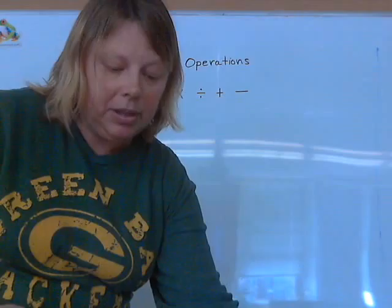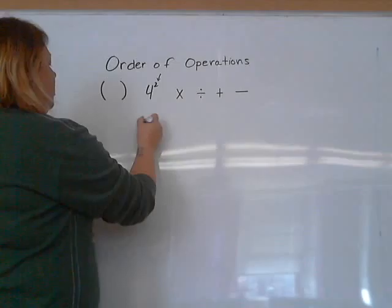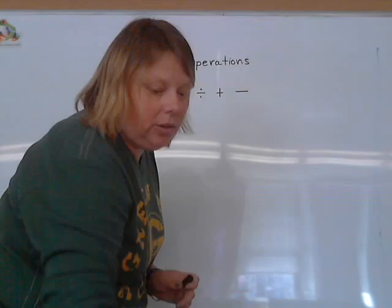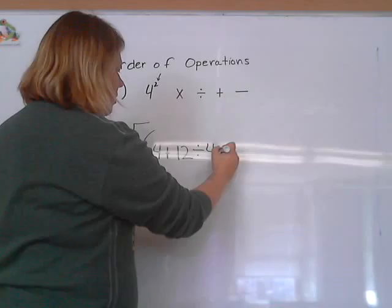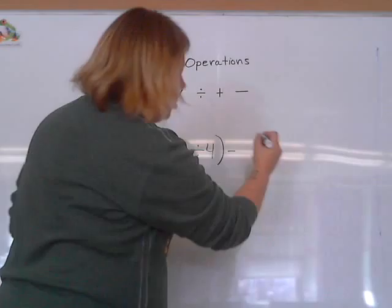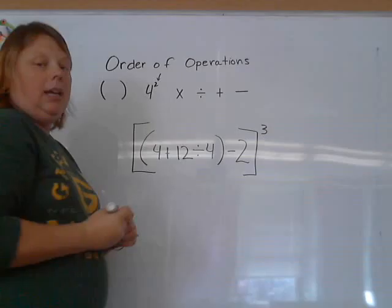They can get a little bit more complicated. Especially when they have different brackets in it. So here's one with a bracket and a parenthesis. Don't worry, you guys can figure this out. 4 plus 12 divided by 4 minus 2, to the third.